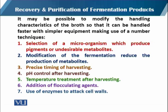What are those techniques? The first technique is the selection of the microorganism which produces pigment or undesirable metabolites, just to indicate where that microorganism fits. The second is the modification of the fermentation to reduce the production of unwanted metabolites. The third is having the precise timing of harvesting.